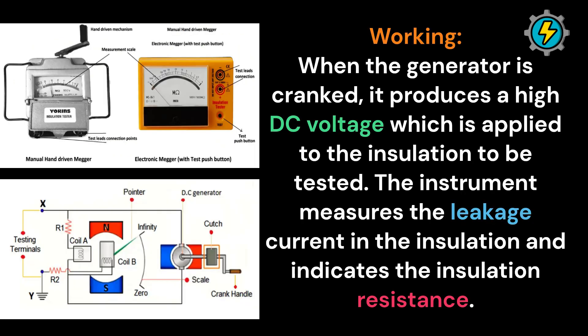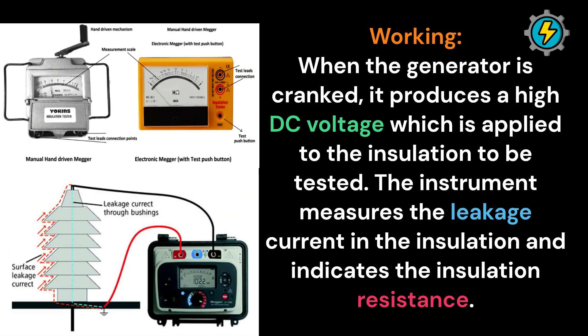Working: When the generator is cranked, it produces a high DC voltage which is applied to the insulation to be tested. The instrument measures the leakage current in the insulation and indicates the insulation resistance.